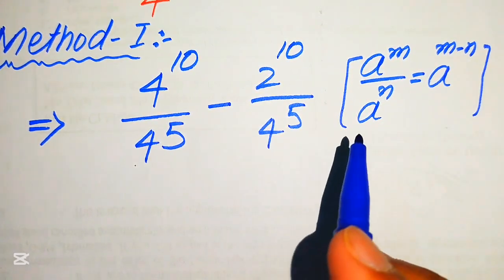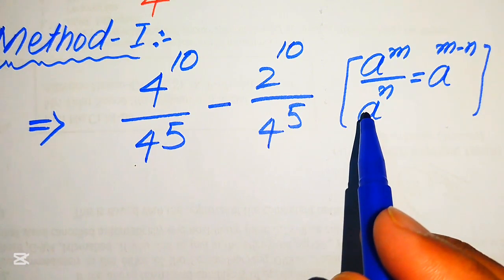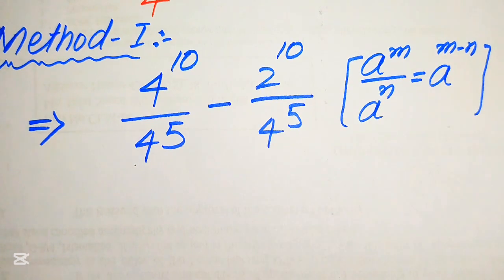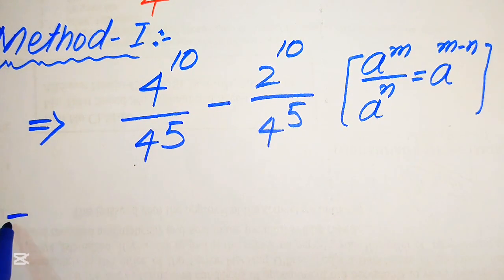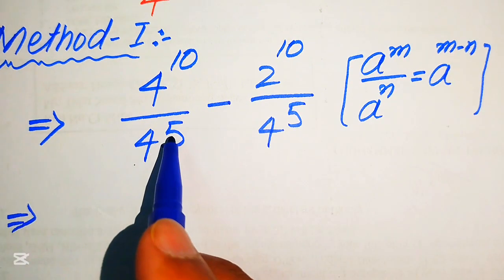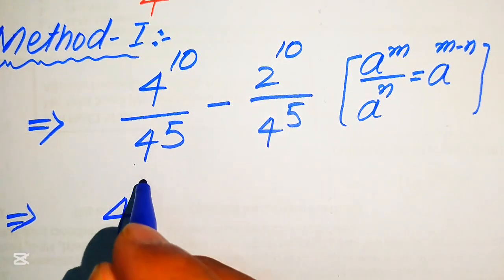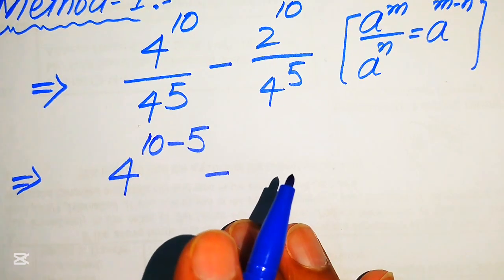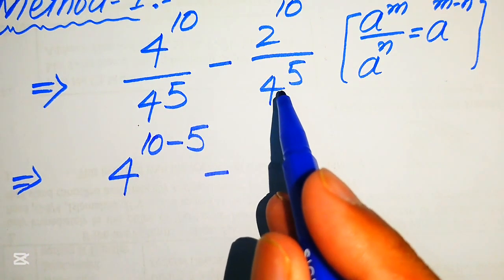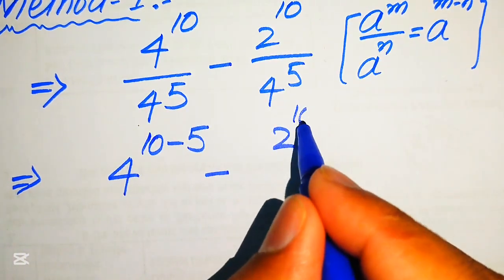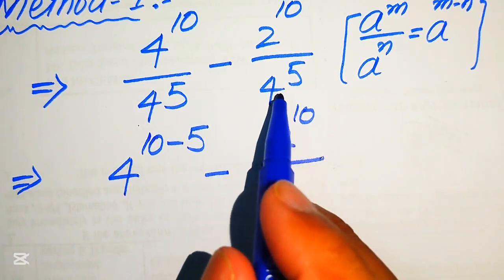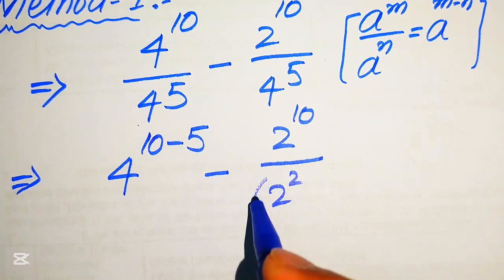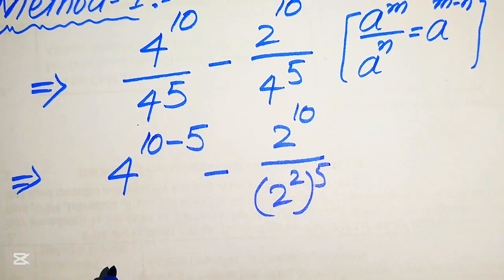We apply this exponent law when the bases of the two terms are the same — we move the exponent from the denominator and subtract it. For the first term, we get 4 to the power of 10 minus 5. For the second term, we focus on the base: we write 4 as 2 squared, and its whole power is 5.